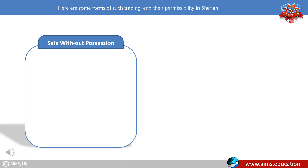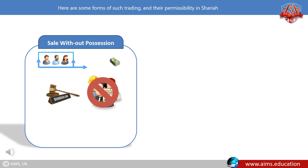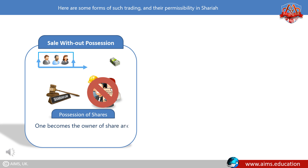Sale without possession. Sometimes people buy shares and then sell them onward without taking delivery. However, Sharia does not permit selling a thing onward prior to taking its possession. Regarding possession of shares, it is important to understand that a share certificate is just a piece of paper. The actual share is one's ownership in a company, and one can sell it only after the risk has been transferred to them.